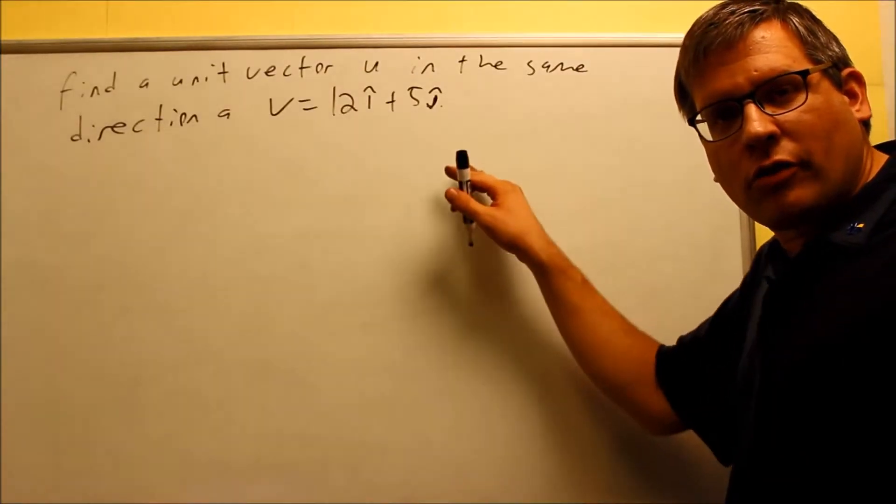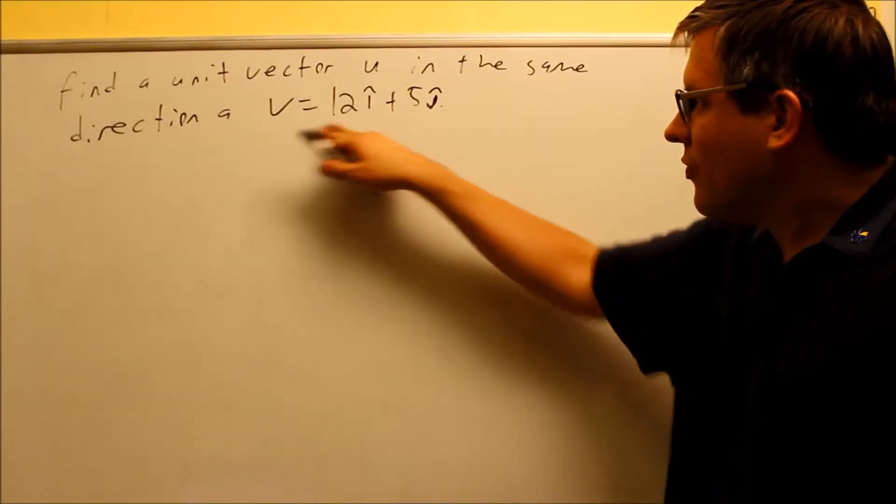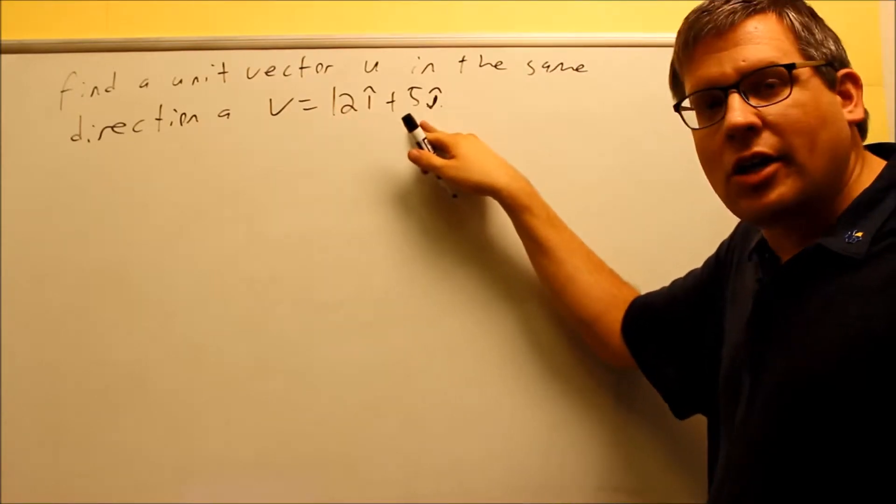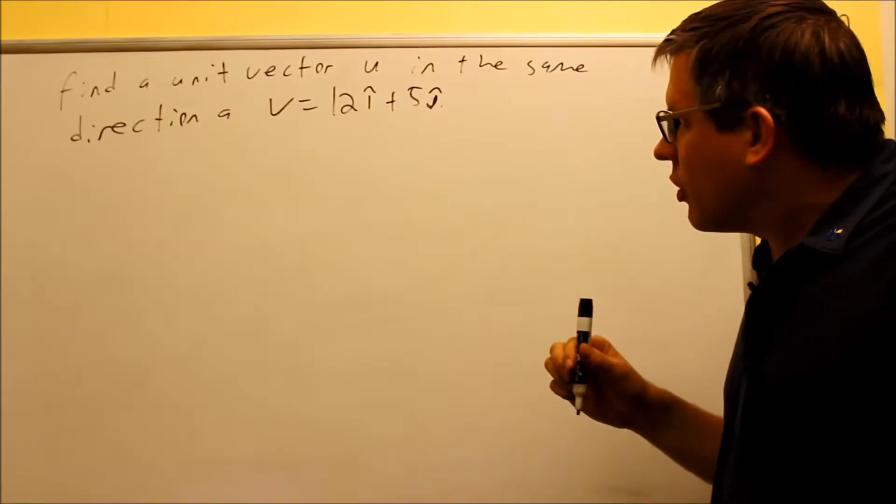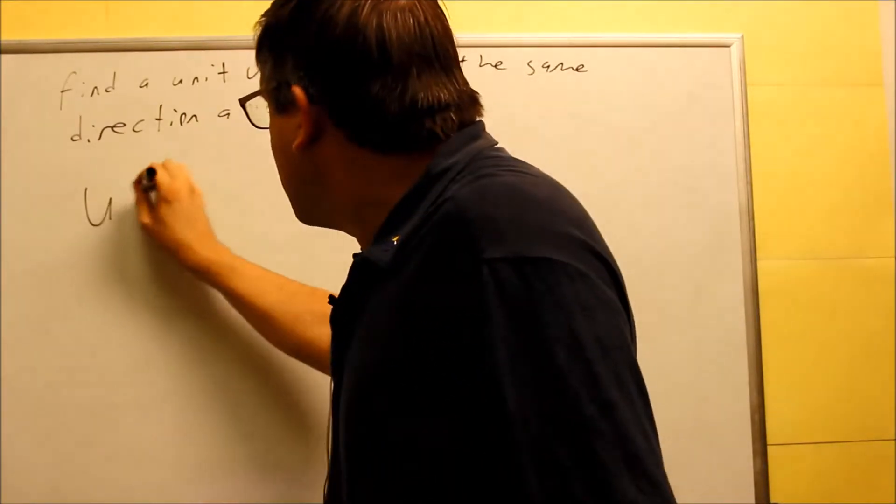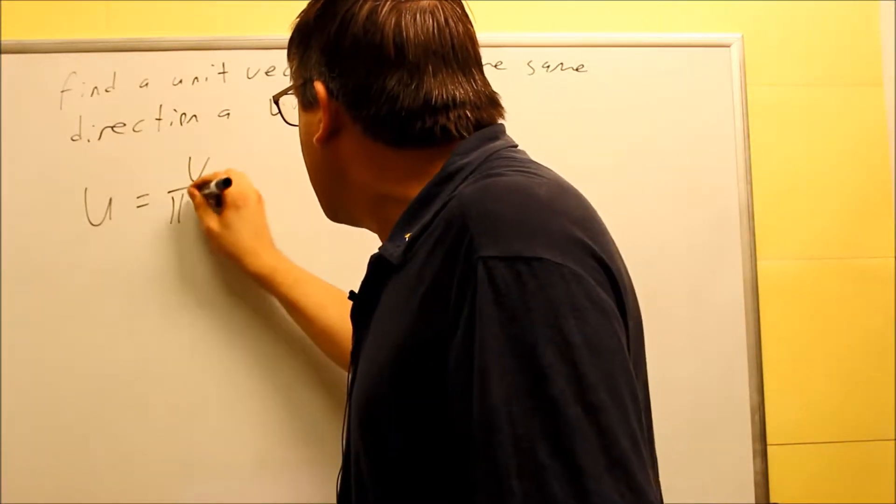Okay, we want to find a unit vector U in the same direction as V and V is given here, 12I plus 5J. Recall the formula we just talked about was in order to find the U, you're going to take V divided by its magnitude.